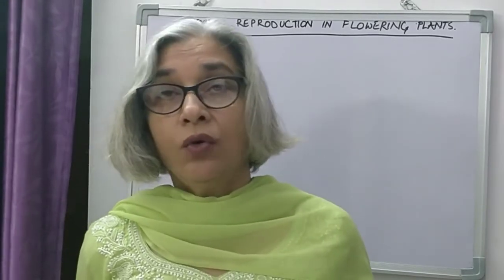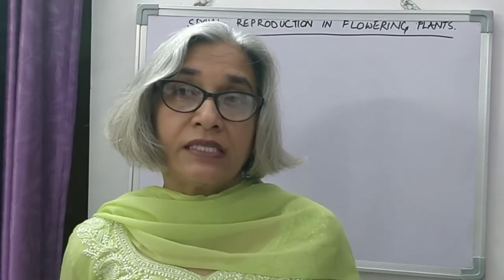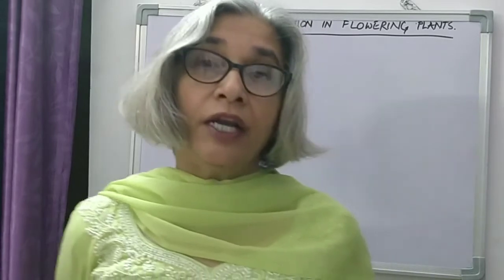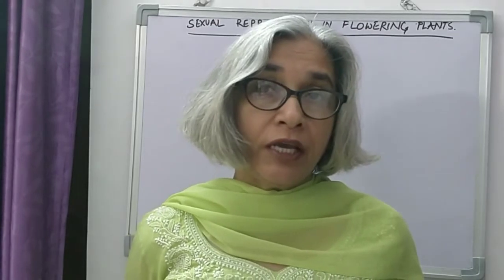The two gametes when they fuse form a diploid cell having 2n number of chromosomes, which is called the zygote. That zygote undergoes cell multiplication — it divides to form more and more cells, all of which are diploid. So a plant body has a sporophytic generation and a gametophytic generation, and there is alternation of generations in the life cycle of a flowering plant.